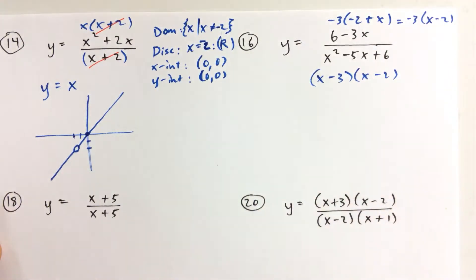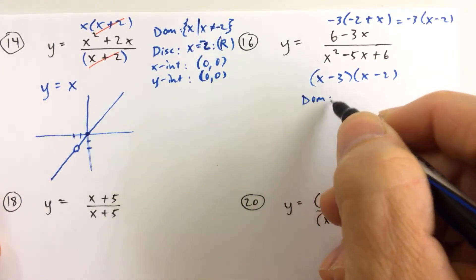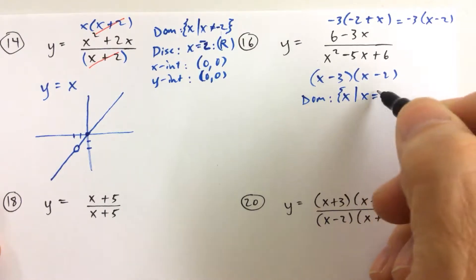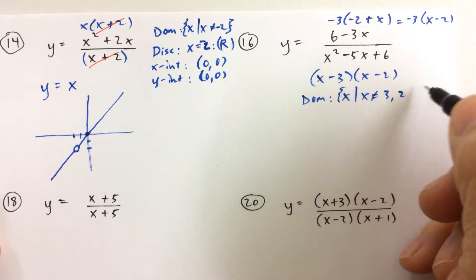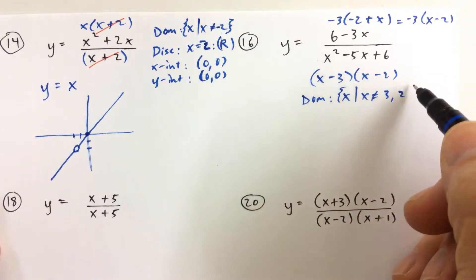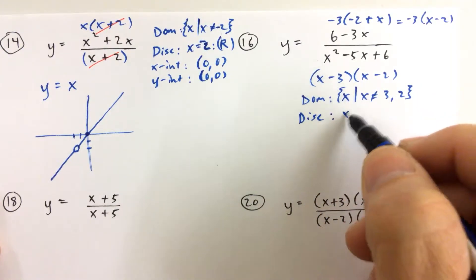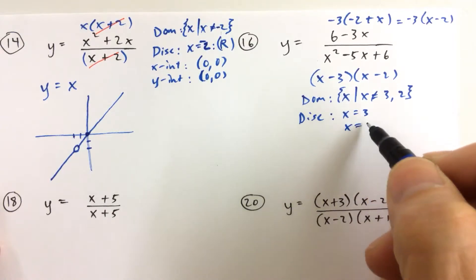So, again, our domain we get before we do any canceling. The domain is all real numbers except for, you may already see that, except for 3 and except for 2 because 3 and 2 make the denominator equal to 0. The discontinuities would be x equals 3 and then x equals 2.